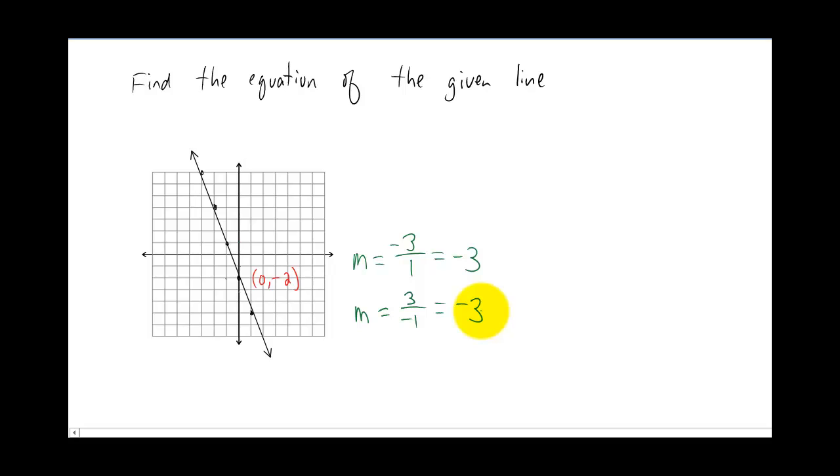But a run left of one represents a run of negative one. So we're actually still going to get negative three as our slope, no matter which way we do it. Okay, put all that information together. We have a slope of negative three and a y-intercept of zero, negative two, and you have yourself the equation of a line. Y equals negative three x minus two.